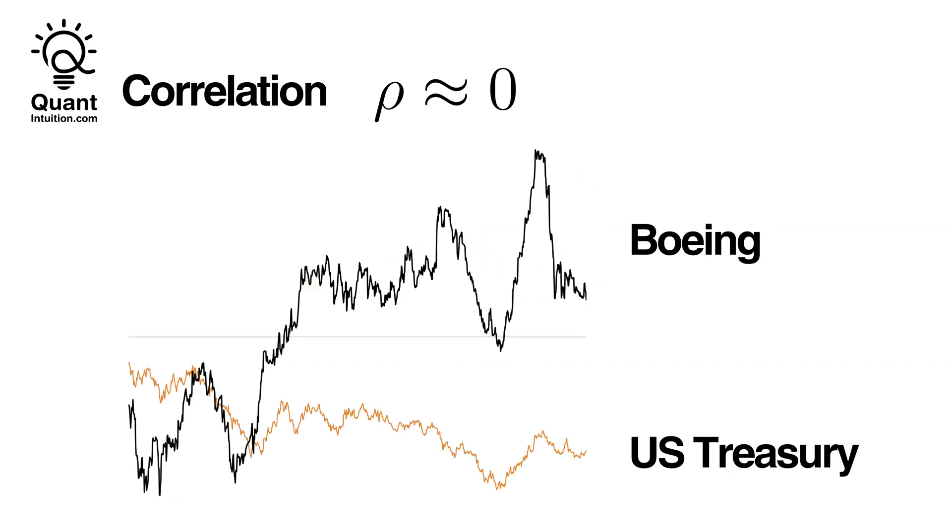Many financial products also exhibit a slight correlation that might not be significant. For instance, Boeing shares and bonds such as US Treasuries have some interdependence but largely move independently from one another.